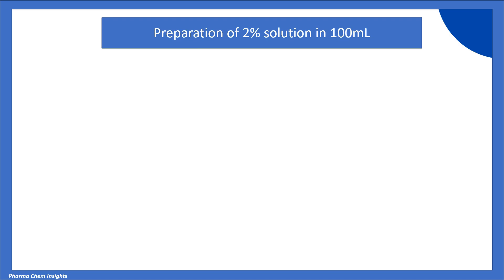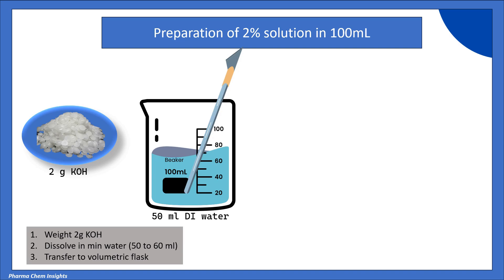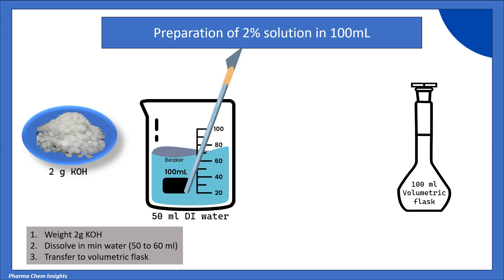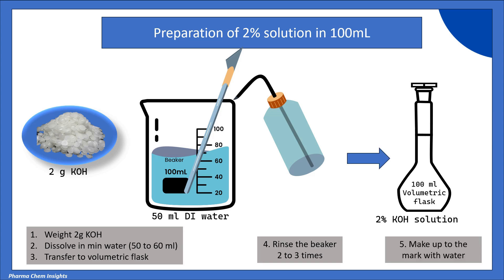Let us see the preparation of 2% KOH solution in 100 ml the correct way. First, weigh 2 grams of KOH and transfer it into a beaker containing 50 to 60 ml of water. Dissolve the KOH with the help of a glass rod and transfer this to a 100 ml volumetric flask. Rinse the beaker 2 to 3 times with small amounts of water and transfer the washings to the same 100 ml volumetric flask. Finally, make up to the mark with water. This is your 2% KOH solution.